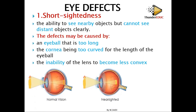Number three, inability of the lens to become less convex. If the lens remains more convex, the light will be bent more and it forms in front of the retina. In normal vision, the image is supposed to form on the retina.